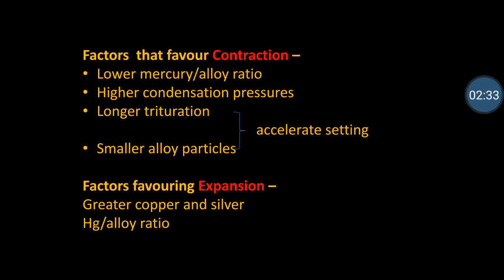The factors that favor contraction are: a low mercury-to-alloy ratio, because without sufficient mercury the growth of gamma 1 phase crystals does not occur; higher condensation pressure, which expresses excess mercury reducing its availability; and acceleration of setting by longer trituration or smaller alloy particles, which also favors contraction.